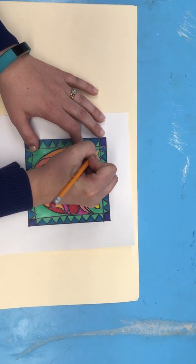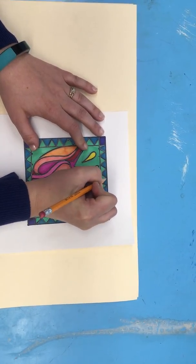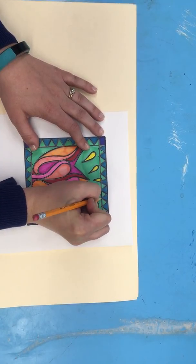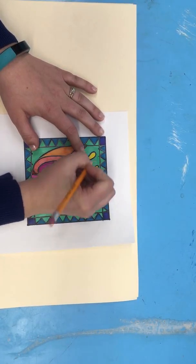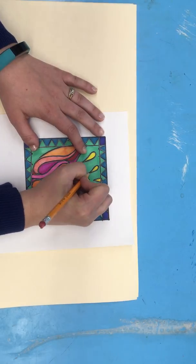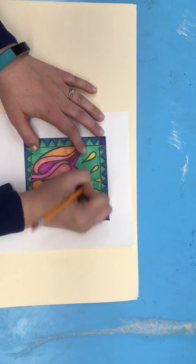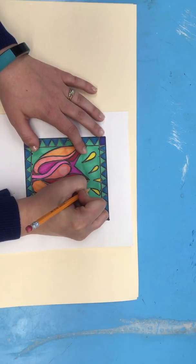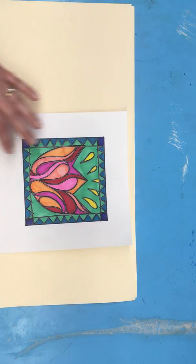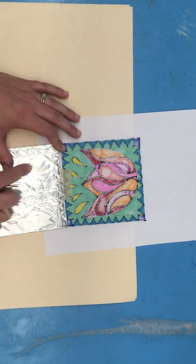You're going to trace over all of your black sharpie lines with your pencil. Go slowly so you don't mess up because we can't erase an indent on the metal tooling foil.